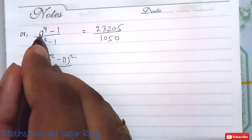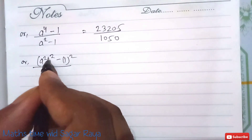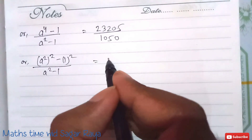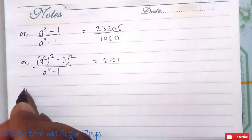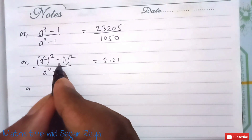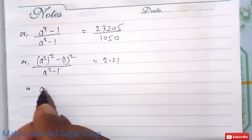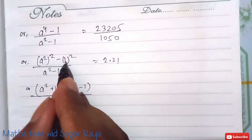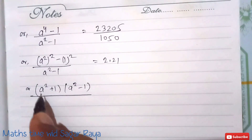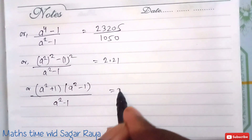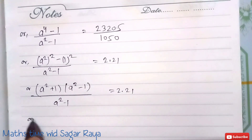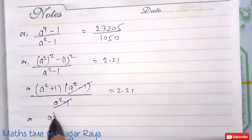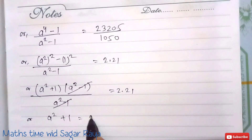We can write a to the power 4 as (a squared) squared. Dividing gives 2.21. Now apply the difference of squares formula: a squared minus 1 equals (a squared plus 1)(a squared minus 1). The (a squared minus 1) terms cancel, leaving a squared plus 1 equals 2.21.